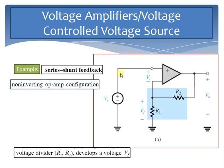A good example of a voltage amplifier is the non-inverting amplifier configuration. The feedback network is a voltage divider composed of resistances R2 and R1, which develops a voltage Vf applied to the negative input terminal of the op-amp. Vs minus Vf provides the differential input voltage Vi. For negative feedback, Vf and Vs must have the same polarity, resulting in a smaller value at the input. If Vs increases, Vout increases and the voltage divider causes Vf to also increase.